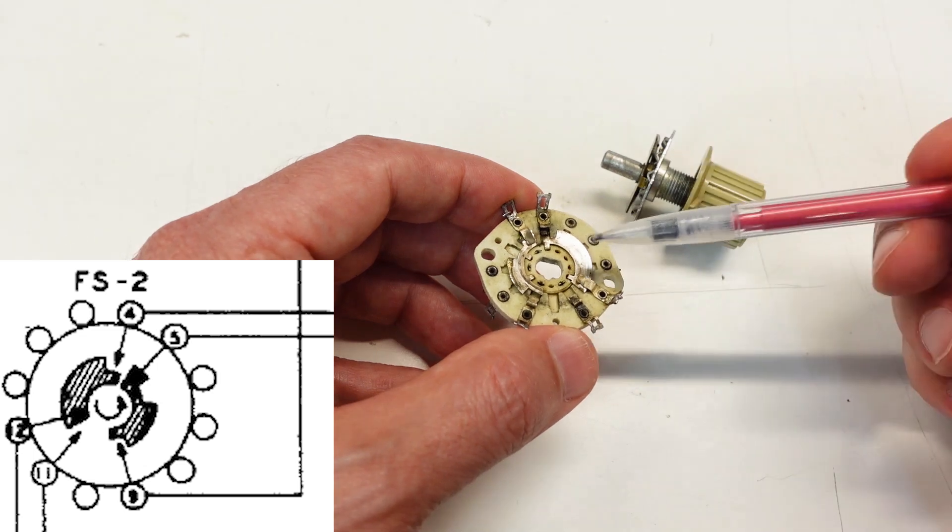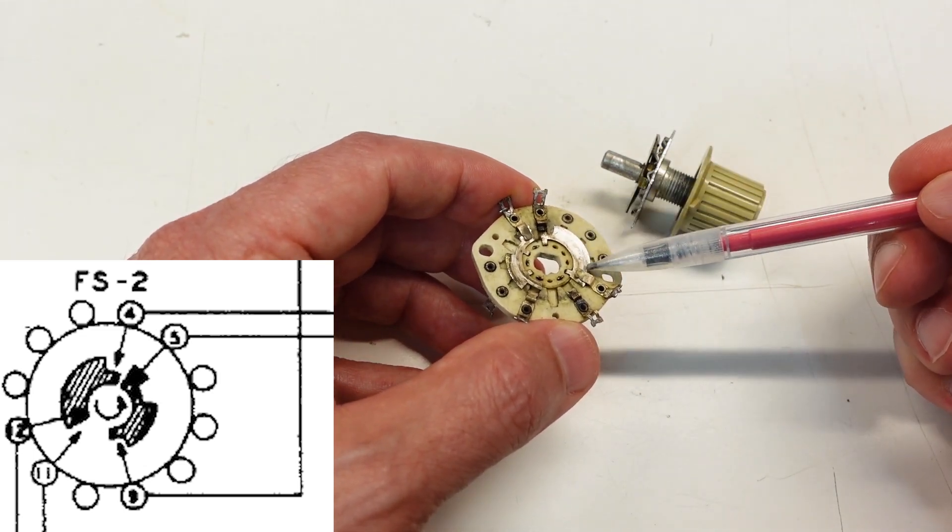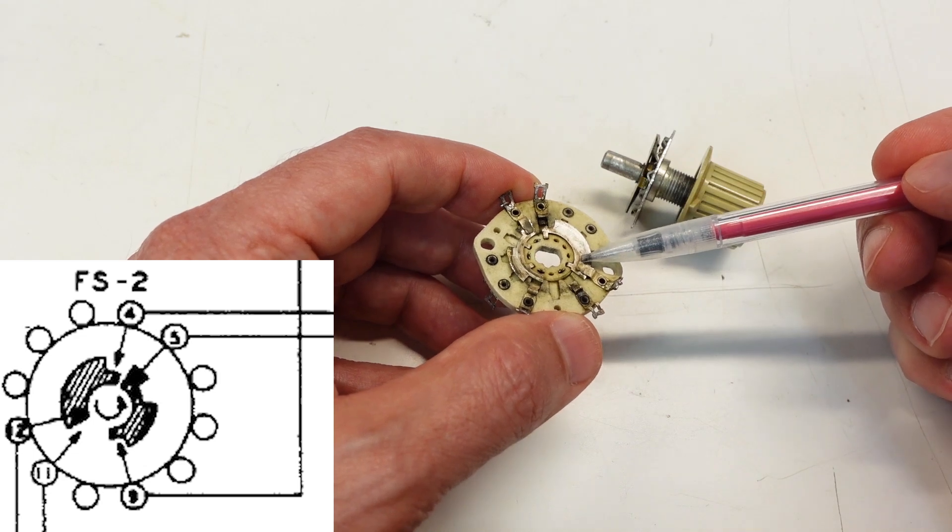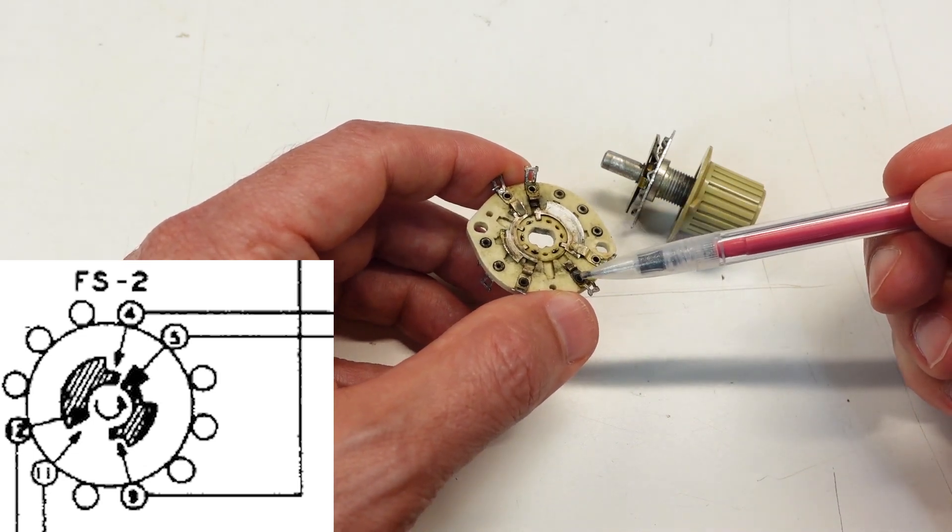But nevertheless, kind of keeping that straight in your mind, there are two poles on this side as well. This one over here controls the AC power to the primary side of the transformer and also to the accessory socket.